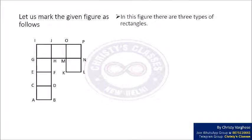For convenience, we mark the given figure as follows. And we can see that in this figure, there are 3 types of rectangles: rectangles with 2 squares, rectangles with 3 squares, and rectangles with 4 squares.